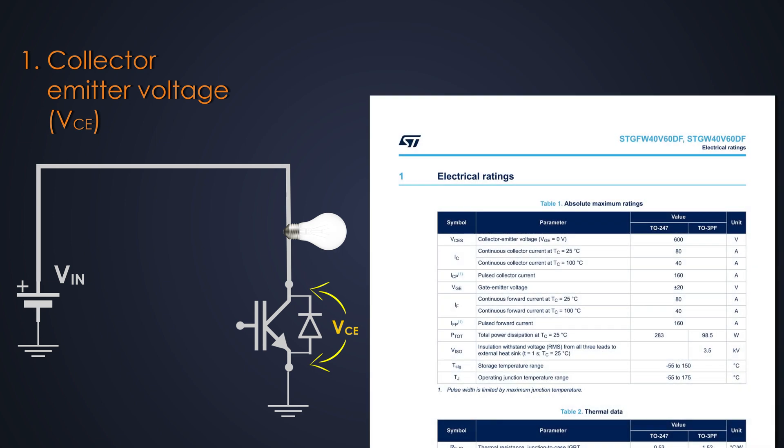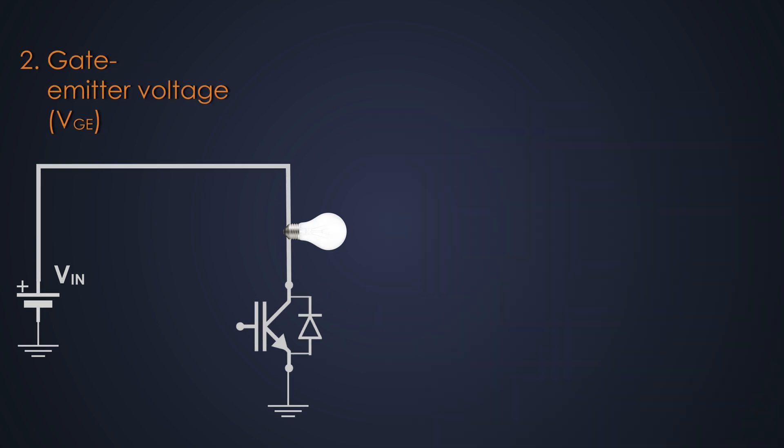Let's see the datasheet. The VCE of the IGBT is around 600 volts, only when the junction temperature is 25 degrees Celsius. The VGE, that is gate to emitter voltage, should be 0 volts. Now, what is VGE?